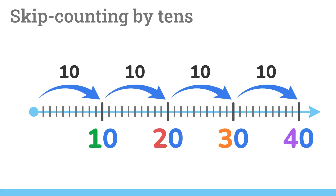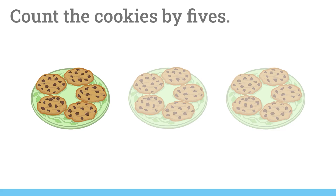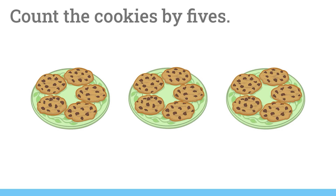Let's practice skip counting with some pictures. Count the cookies by fives. These cookies are in equal groups. First, let's make sure there are five cookies on each plate. On the first plate, we have one, two, three, four, five cookies. These groups have five cookies, so now we will count all the cookies in groups of five.